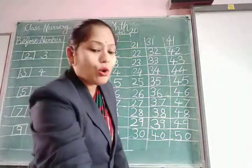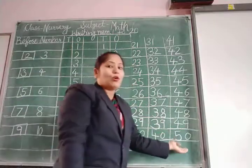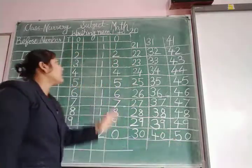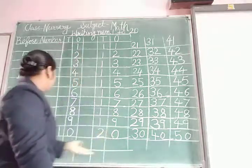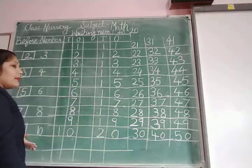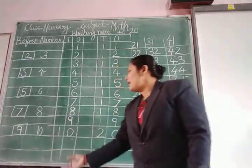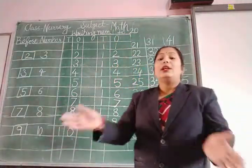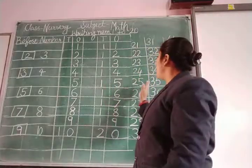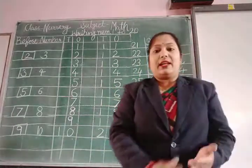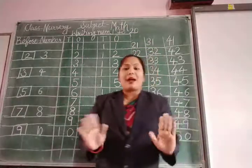This is your oral work. 1 to 50 is your oral work. 1 to 20 is your writing work. And this before number is also your writing work. So do before number and writing numbers 1 to 20 in your maths notebook. Learn oral counting 1 to 50. Take care. Thank you so much. Bye-bye.